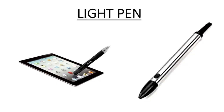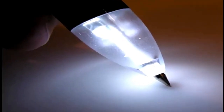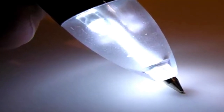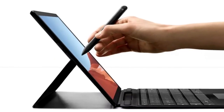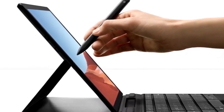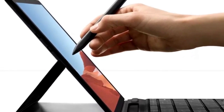Light pen. A light pen allows the user to point to displayed objects on the computer screen. It is used to write or draw on the computer screen.